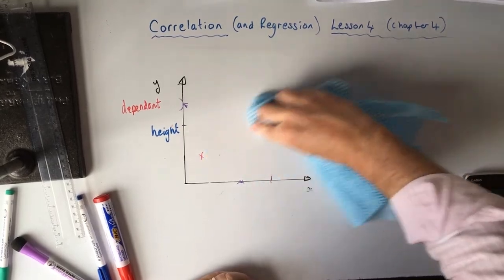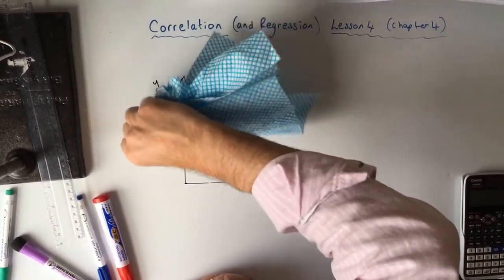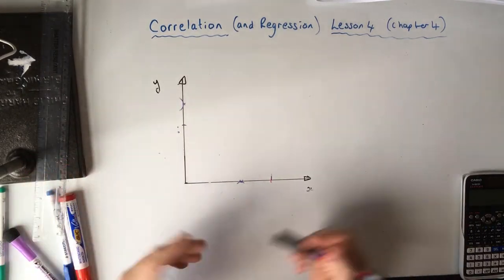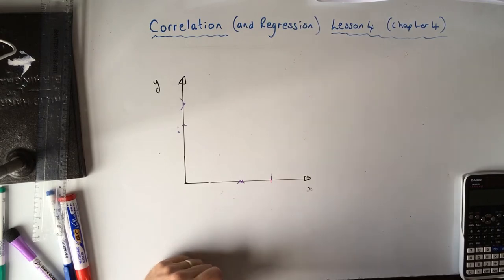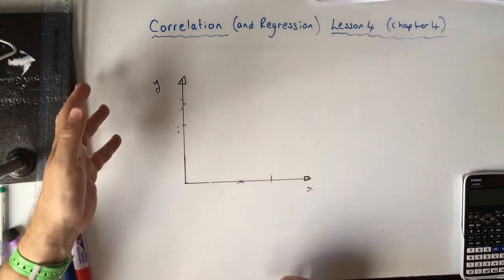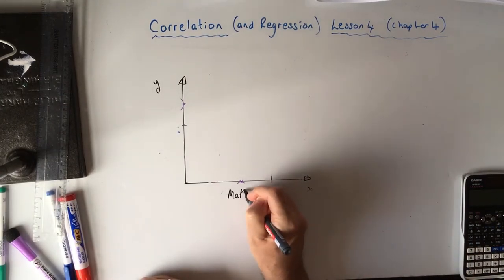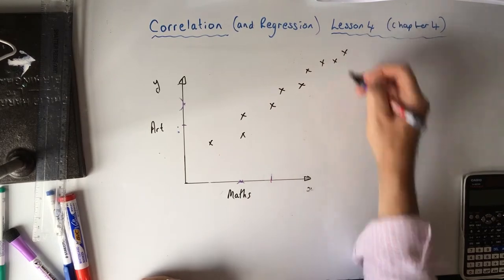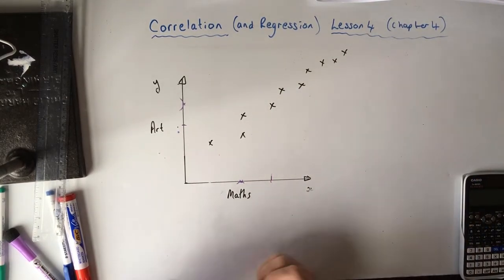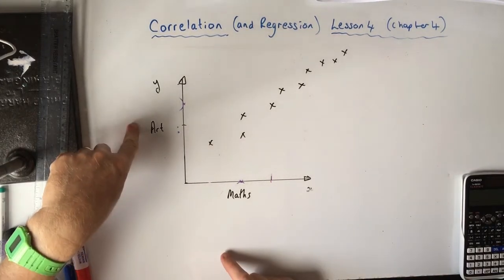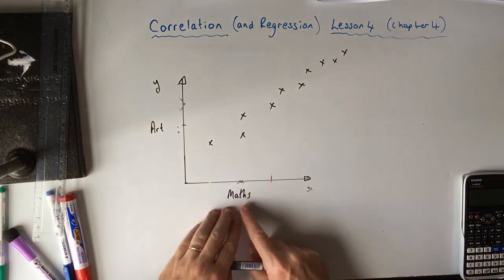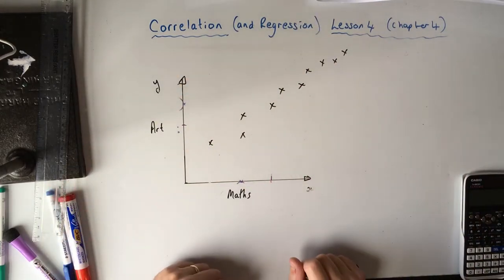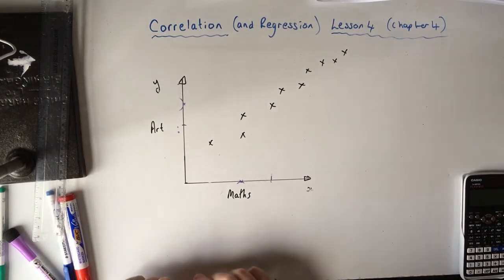An example: take 10 students and plot their maths scores against their art scores. When you plot them, you might find positive correlation. But you wouldn't say people are good at art because they're good at maths — being good with numbers is not a skill that then leads them to be good at painting. So there's not a causal relationship here.